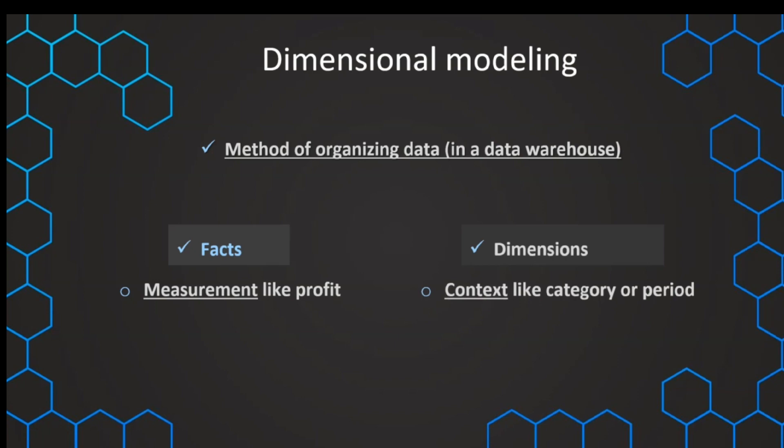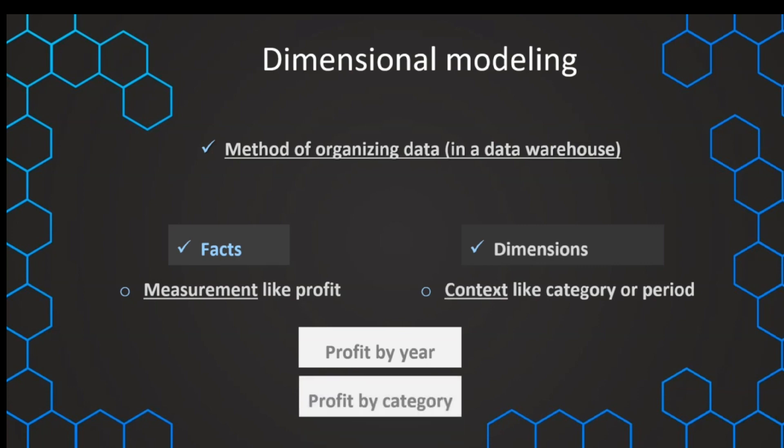For example, it can be something like a month, a time period, or also a product category. And then with this dimension, we can give additional context. We can turn the fact, the measurement, with the context into meaningful insight. For example, we can analyze the profit by year or the profit by category. And then with this additional context to our measurement, we get the meaningful insight from our data.